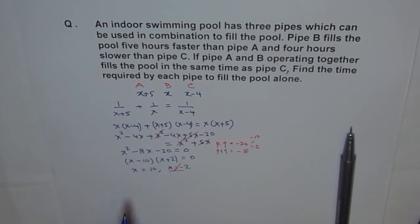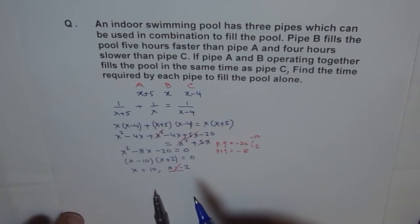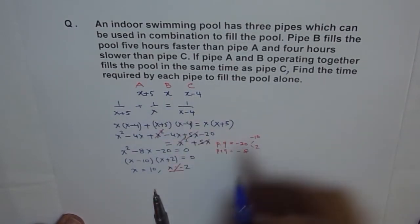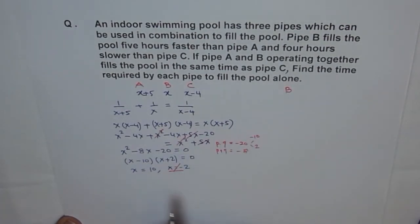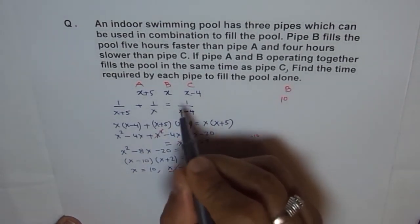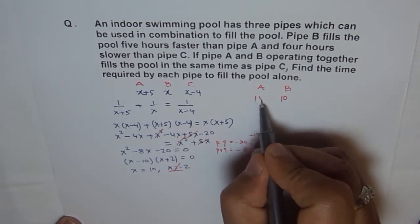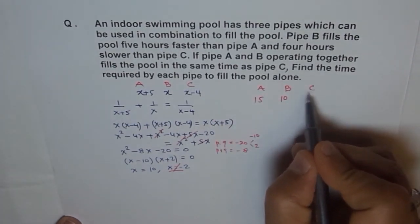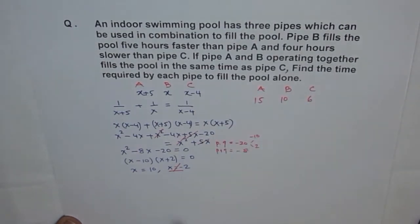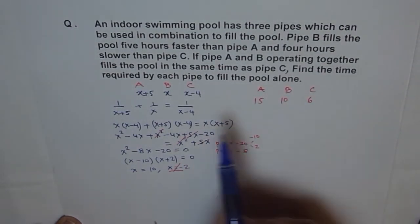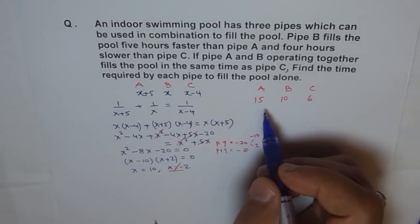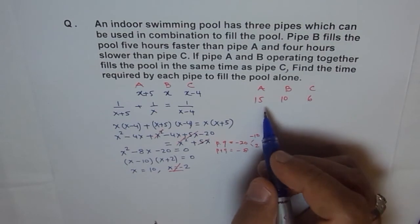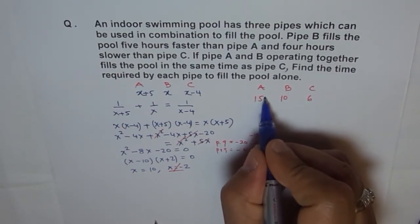With X equals ten, we find the time for each pipe. Pipe B takes X equals ten hours. Pipe A takes X plus five equals fifteen hours. Pipe C takes X minus four equals six hours. So the time required by each pipe to fill the pool alone is measured in hours.